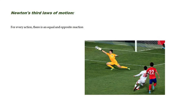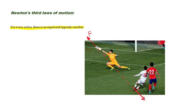The third law of motion says that for every action there is an equal and opposite reaction. To understand the law, you can consider yourself shooting a ball. When you shoot the ball, your foot exerts a force on the ball, and the ball exerts an equal and opposite force on your foot. This is the force your foot exerts on the ball, and this is the equal and opposite reaction of the ball on your foot.